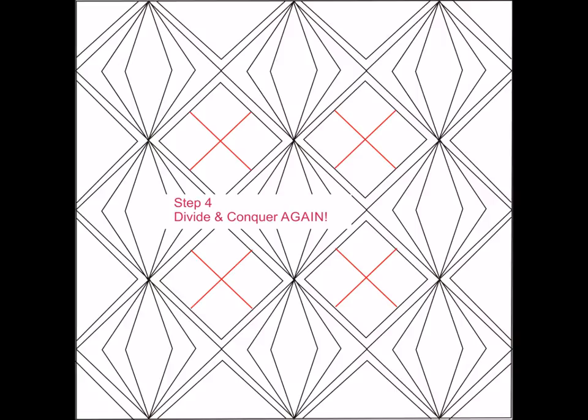Okay, the next thing we're going to do is divide and conquer again. We're going to take those inner squares that are formed between the diamonds. And we're going to divide those in half one way and half the other way, forming a big X in the middle, just like it's shown on the diagram.